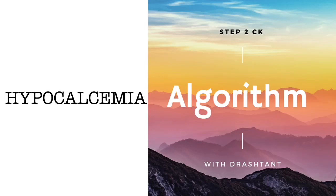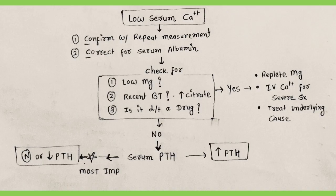Hello friends. How do you manage hypocalcemia? Let's simplify it. The first step in evaluating hypocalcemia is to measure the serum albumin level, because hypoalbuminemia lowers total circulating calcium without affecting the metabolically active ionized calcium concentration. This is called pseudo-hypocalcemia. If albumin is low, a corrected calcium level can be calculated using the formula written on the last slide.